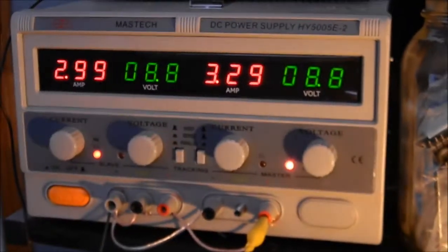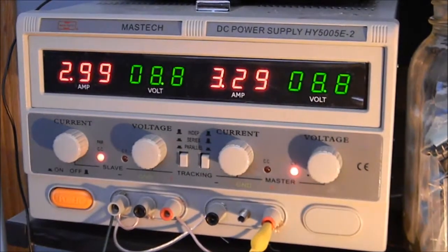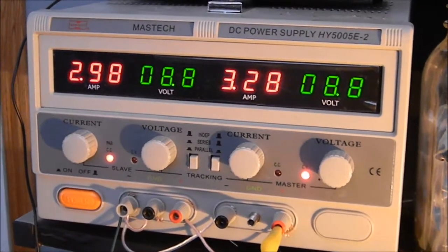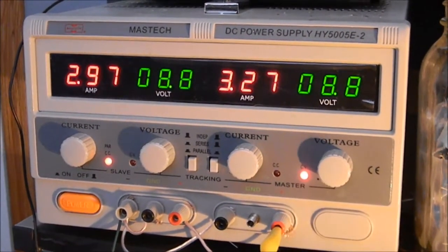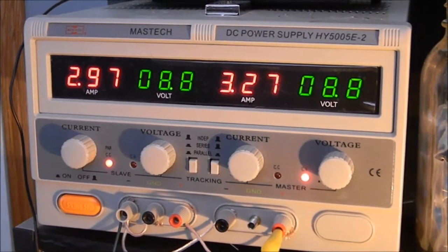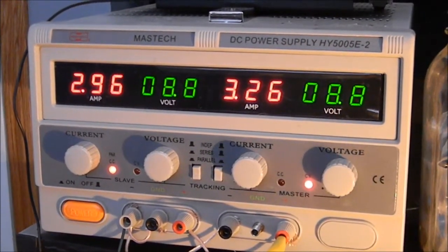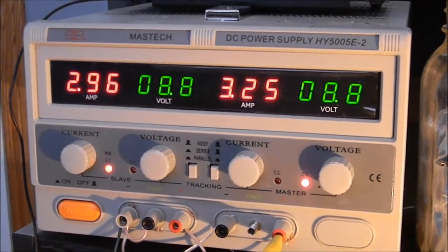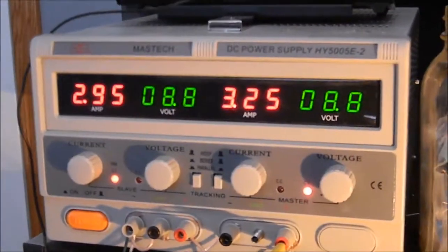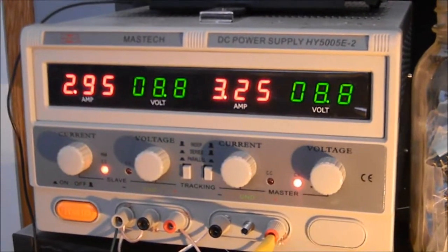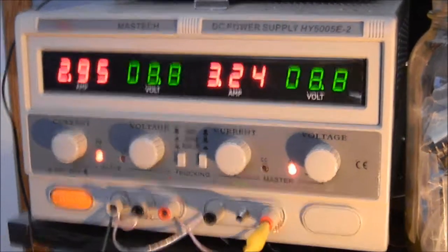And we got 8.8 volts, and we'll say at three plus 3.26, so 6.26 amps. 8.8 at 6.26 amps - we can figure out the efficiency using these numbers.